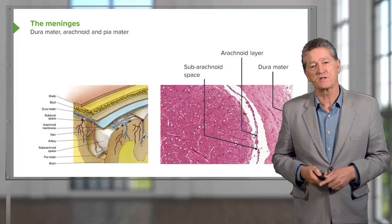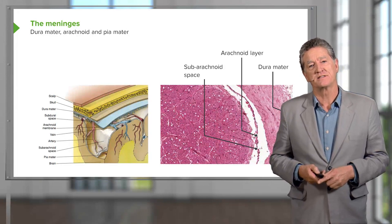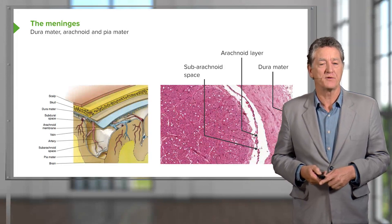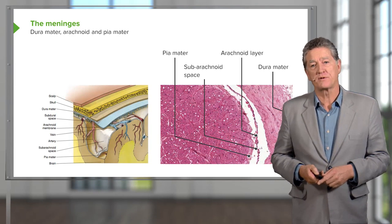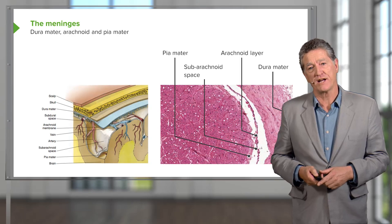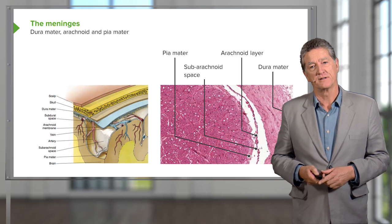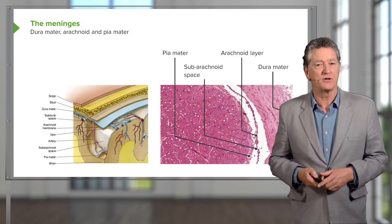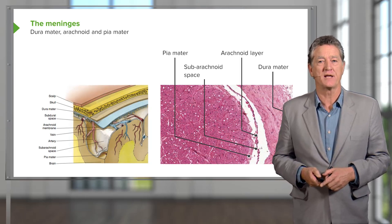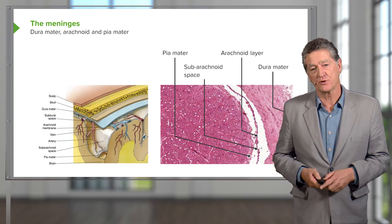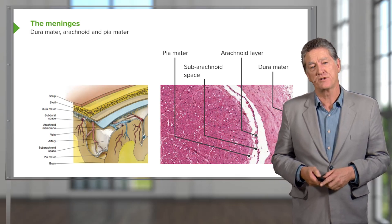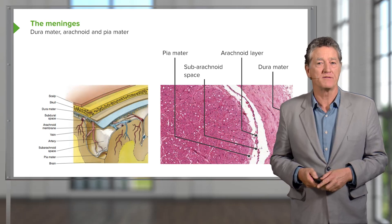The subarachnoid space also houses some of the large vessels before they pass into the deep substance of the brain. The most internal covering around brain tissue is the pia mater. It forms almost an epithelial surface on the surface of the brain tissue and penetrates some distance into the neural tissue, particularly carrying very small blood vessels.